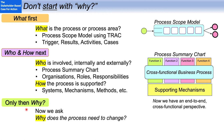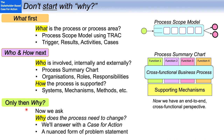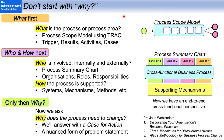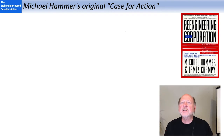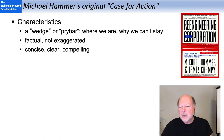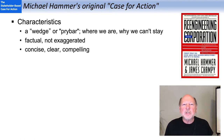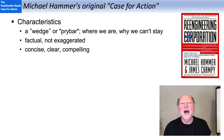We're going to answer the question 'why does the process need to change' with a case for action — a richer and more nuanced form of problem statement. I first became familiar with this framework in Michael Hammer's landmark book, Re-Engineering the Corporation. He described the case for action as like a pry bar that would pry people loose from their attachment to the status quo and help them see the need to move forward. He stressed it had to be factual, not exaggerated, and concise, clear, and compelling — ideally a one-pager. He articulated five components to his case for action.